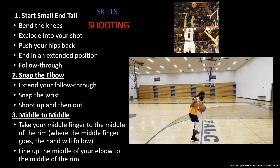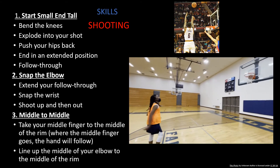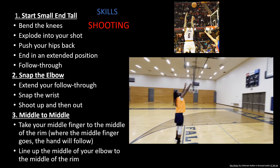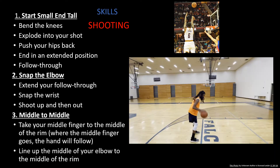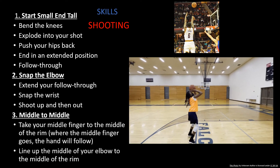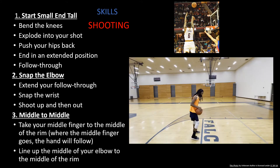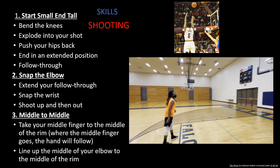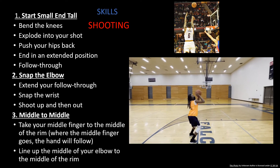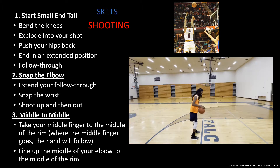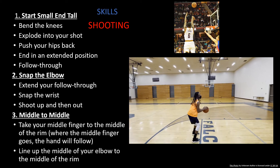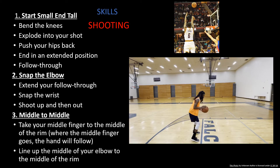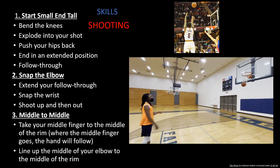Let's go over shooting skills. Number one: start small and end tall. Bend your knees, explode into your shot, push your hips back, end in an extended position and follow through. Two: snap the elbow, extend your follow through, snap the wrist, shoot up and then out. And three: middle to middle — take your middle finger to the middle of the rim. Where the middle finger goes, the hand will follow. Line up the middle of your elbow to the middle of the rim.